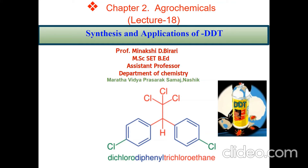We know that agrochemicals are the chemicals used to control pests and to increase crop yield. Chemicals such as insecticides and herbicides help to control the presence of unwanted plants or insects. But many agrochemicals are toxic in nature and all have an impact on the environment as well as on the crops. We have already studied the advantages and disadvantages of agrochemicals in earlier lectures.